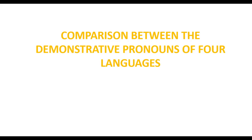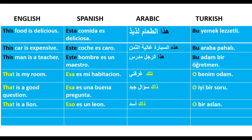Hi, welcome to this tutorial. In this video I am going to compare between four languages: English, Spanish, Arabic, and Turkish. The topic is a comparison between the demonstrative pronouns of these four languages. We want to see the demonstrative pronouns: this, that, these, and those. Let us see how they are used in the four languages.